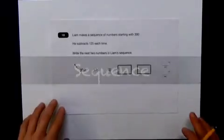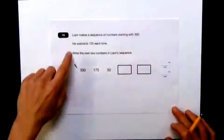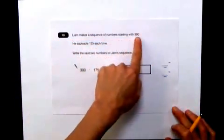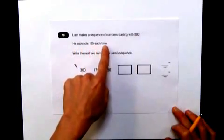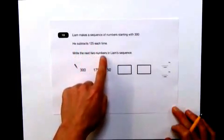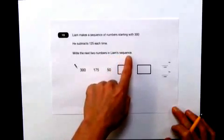This one's a tricky one. Let's read the question. It's worth two marks. Liam makes a sequence of numbers starting with 300. He subtracts 125 each time. Write the next two numbers in Liam's sequence.